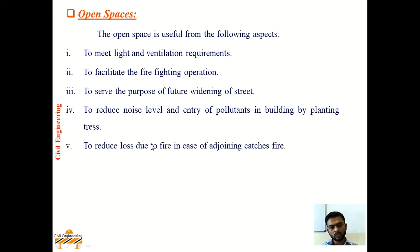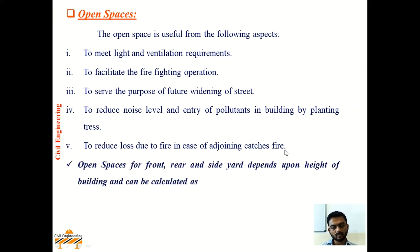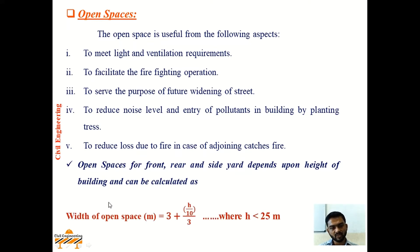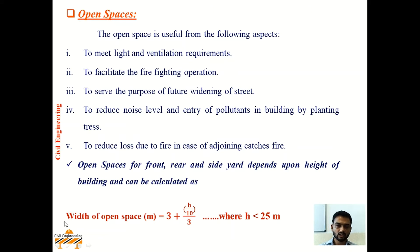To reduce loss due to fire in case an adjoining building catches fire. Open spaces for front, rear, and side yard depend upon the height of the building and can be calculated as: width of open space (in meters) = 3 + h/10 divided by 3, where h is the height of the building. This formula is used when the height of the building is less than 25 meters, and it can apply to front space, side space, or rear space — also called margins.